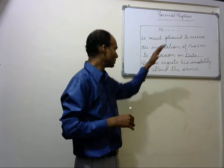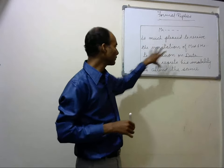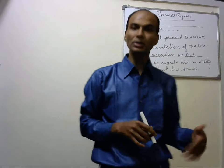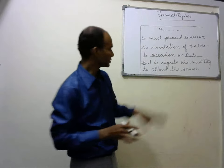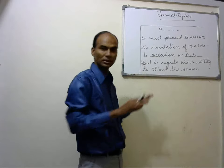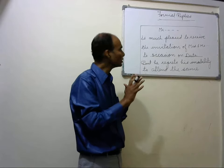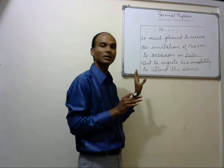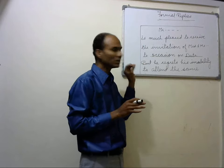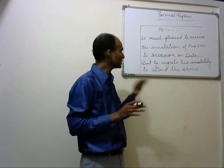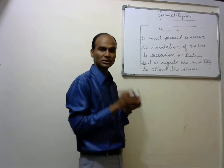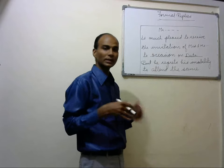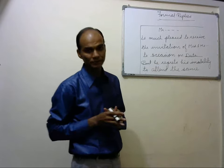So here we have written that he is unable to attend, and so regrets his inability to attend the same. This is the complete language. After this, in the end you can write 'regards' or 'thanks.' With that expression you can close the box, and you will be given four marks for drafting this formal reply. Just one pattern you have to learn and that is what you copy in your answer sheet.